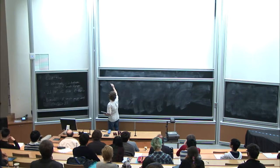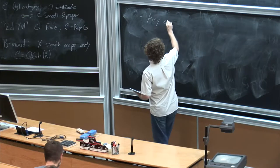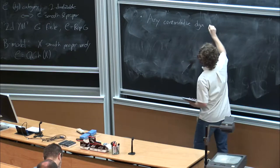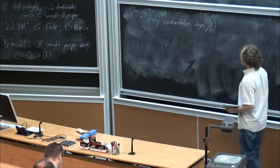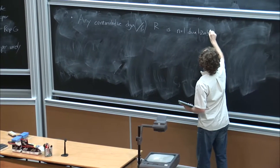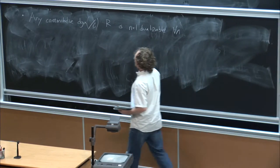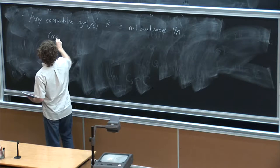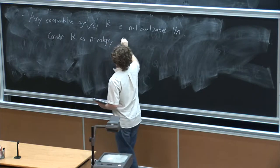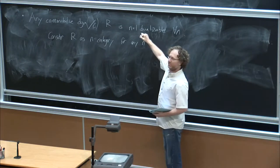Here's a main class of examples I want to start with. Suppose we take any commutative ring — by ring I mean commutative differential graded algebra — and again everything I'm talking about I'm only going to work over C. Any commutative ring R is n plus 1 dualizable for any n. I can think of a commutative ring, I can consider the ring R as an n-category for any n. And the claim is that this n-category is going to be n-dualizable.